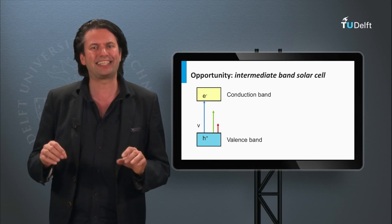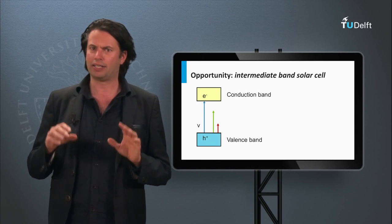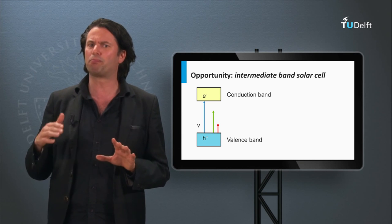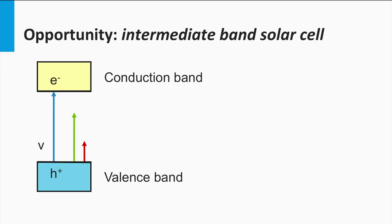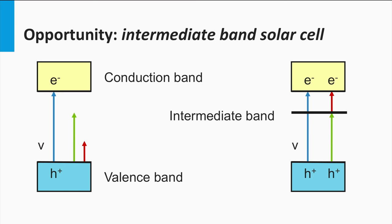Next, we look at the intermediate band solar cell. This concept tries to tackle the problem that each charge carrier only has a single population state. Here we see a semiconductor material with valence band and conduction band. An intermediate band material contains a narrow electronic band in the band gap as well. Such a structure is believed to increase the spectral utilization.